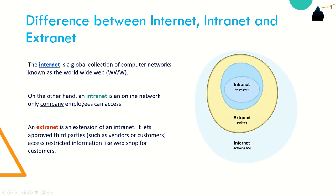Anyone outside your company cannot connect to employees via the intranet. Extranet: an organization may use an extranet to provide secure and safe access to individuals who work for a different organization but require access to the organization's data. Examples of extranet use include a company providing access to outside suppliers and contractors, or giving customers access to a webshop.